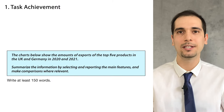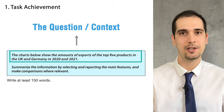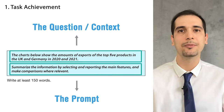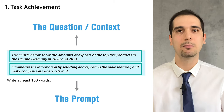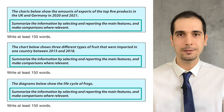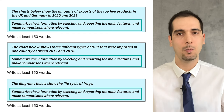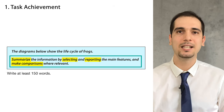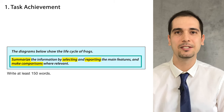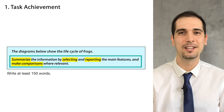What is task achievement? If you look at any task one question you will see two parts: the first part is the context or the question itself, and the last part is a prompt. A prompt is a call to action — it asks you to do specific things. If you go through some IELTS questions you will understand that all the prompts in writing task one are the same, whether it is a pie chart, bar chart, line graph, or table. The prompt always says: summarize the information by selecting and reporting the main features, and make comparisons where relevant.